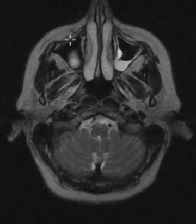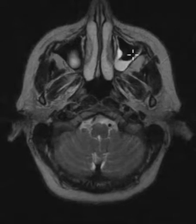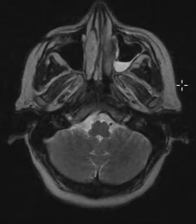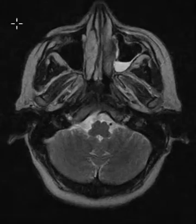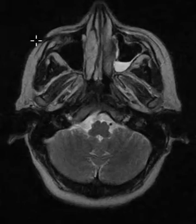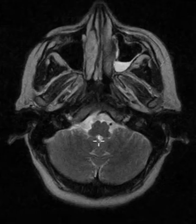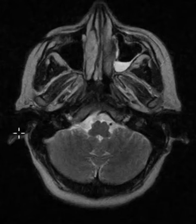This is the right maxillary sinus and this is the left maxillary sinus. Air, as you can see outside the body, is dark — it should be dark like in the right maxillary sinus. This is the nose to get oriented, this is the cerebellum in the back, and here are the ears on the left and right side.